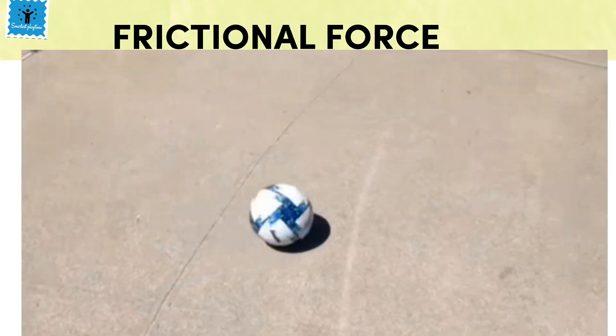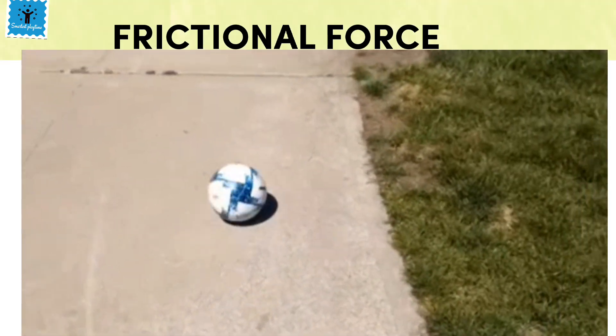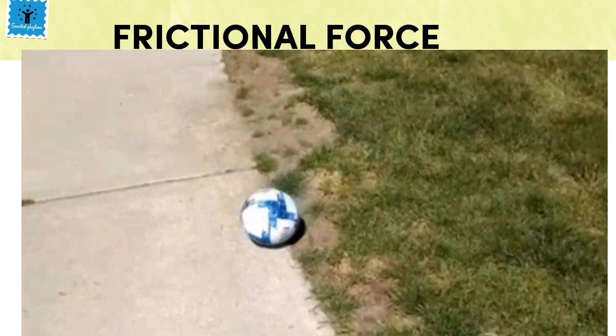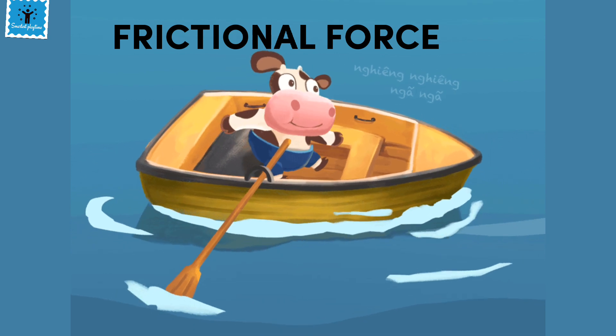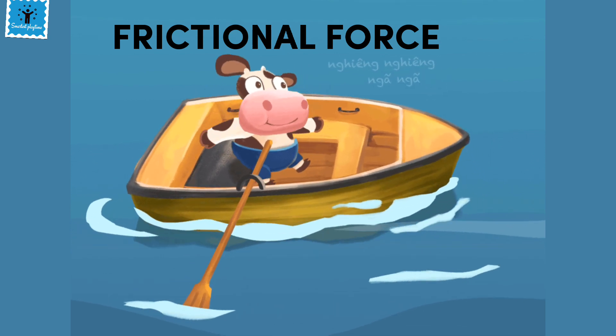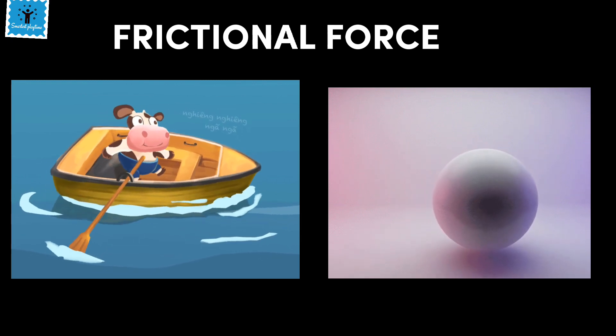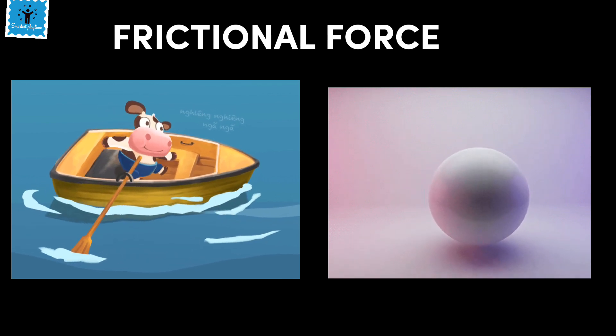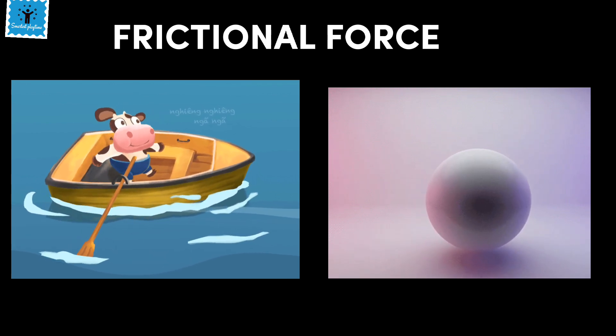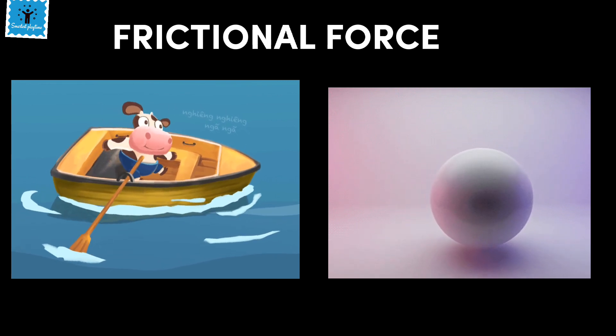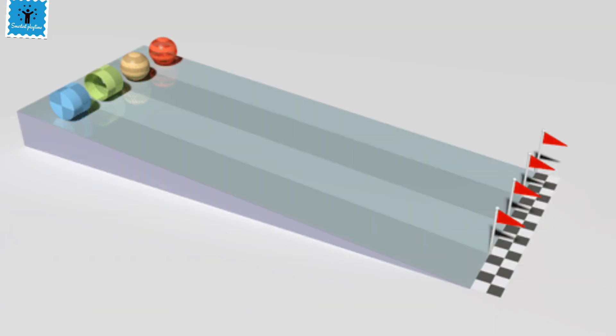The first type of contact force is friction force. Let's take a few examples: take a ball and roll it along the ground. After some time you will notice that it gradually slows down and finally comes to rest. Similarly, a boat comes to rest if you stop rowing it. In both situations, no force appears to be acting on the object, yet their speed gradually decreases and they finally come to rest. So what causes a change in their state of motion?